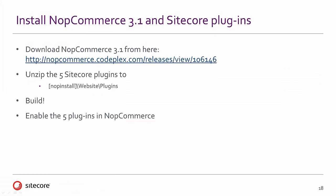Step two is to install NopCommerce 3.1 and install the Sitecore plugins to that NopCommerce installation. It must be NopCommerce 3.1 specifically — this integration does not work with later versions of NopCommerce due to changes on their side. I have referenced the URL to the specific version 3.1 that you need. We'll download NopCommerce, install it, unzip the five Sitecore plugins to those locations, build those plugins, and enable them in NopCommerce.